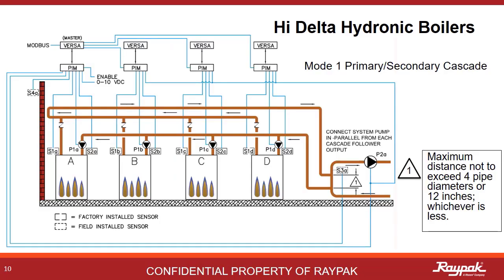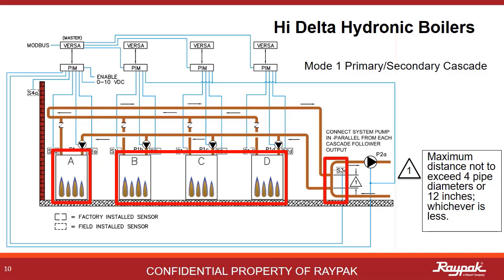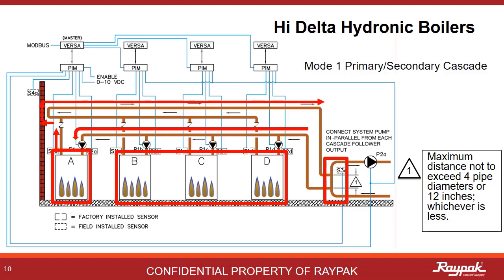This is the Mode 1 cascade system. Boiler A on the left is the master boiler, and boilers B, C, and D are the followers. All of the same decoupler concepts apply — only now they apply to the whole cascade. An important part of plumbing boilers in cascade is to use reverse-return logic: the first boiler out to the loop is the last boiler to receive water back from the loop.